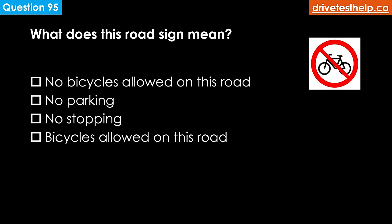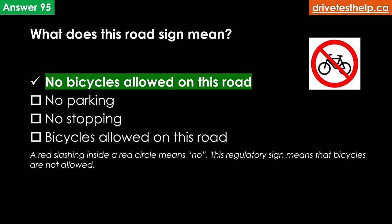What does this road sign mean? Options: no bicycles allowed on this road; no parking; no stopping; bicycles allowed on this road. The correct answer is no bicycles allowed on this road.